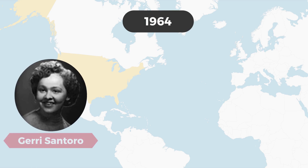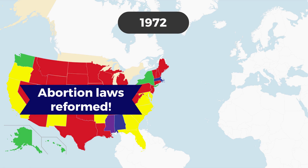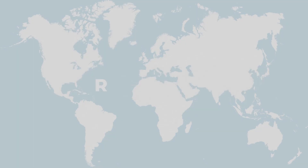By 1972, abortion laws were reformed nationwide. Specifically, 30 states deemed abortion illegal without exception, 16 states deemed abortion legal in certain special circumstances, and four states allowed abortion upon request.